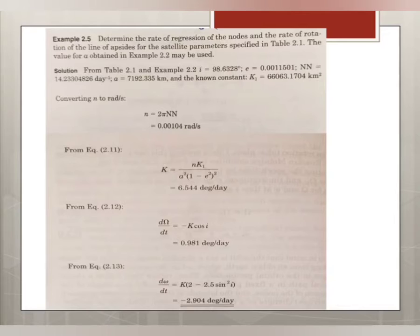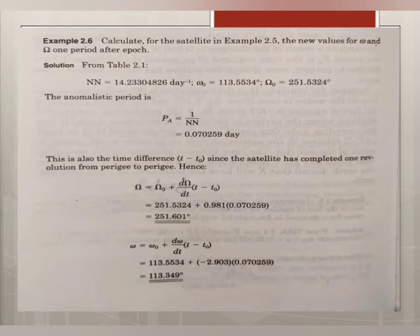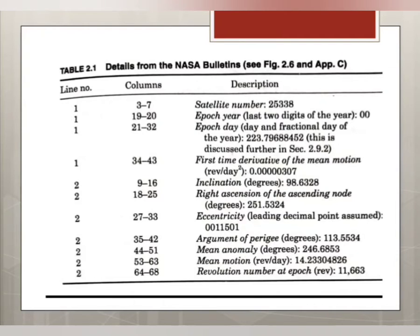The next problem: calculate for the satellite in Example 2.5 the new values for omega and ohm one period after epoch. Here also the values are taken from table 2.1, from this table.